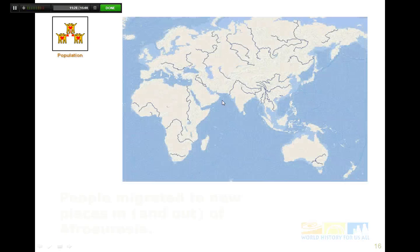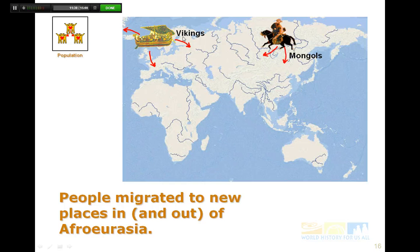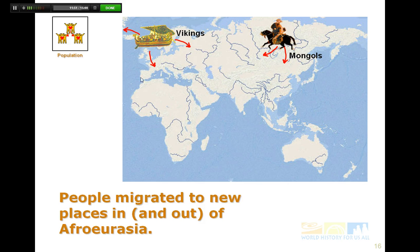Some interesting things to identify here: the Vikings were some of the big movers and shakers of this period, moving all the way to the Americas and trying to establish one of the first permanent settlements there. The Skrellings are the people that come to mind here. The Vikings were also great distributors of wealth since they would float these very large vessels.